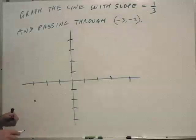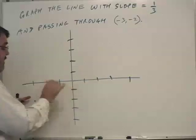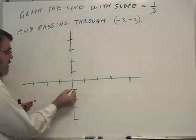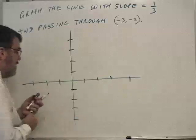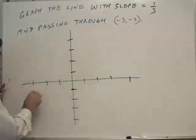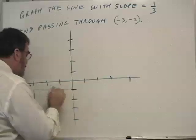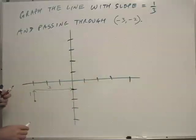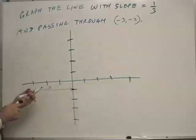And the slope is 1/3, which means that to get to another point, I would go up one unit and right three units. So let me kind of draw that in. It has a 1 to 3 ratio: rise of one unit and a forward run of three units.